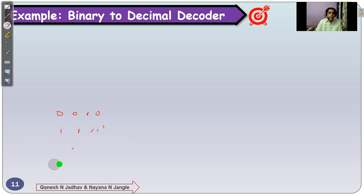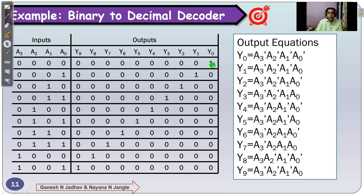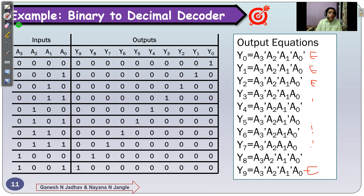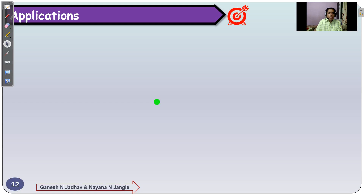To design the circuit, we write the output equations from the truth table. Y0 equals 1 when A3-dash · A2-dash · A1-dash · A0-dash — that is the minterm. Y1 is present when A0 equals 1: A3-dash · A2-dash · A1-dash · A0. The enable signal E is multiplied with all output equations — it has not been explicitly written here to avoid complexity, but the enable signal is always required and must be ANDed with every output equation.